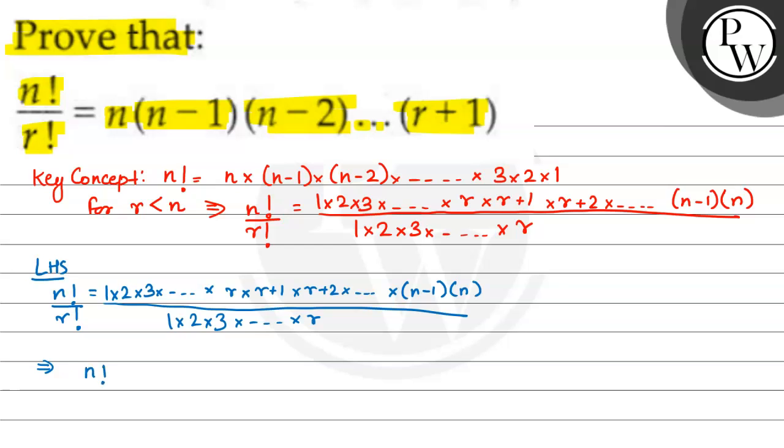This implies N factorial upon R factorial would be equal to R plus 1 बचा यहाँ पे. Multiplication तब तक चलती रहेगी जब तक N minus 1 multiplied by N. तो denominator में तो 1 है. N multiplied by N minus 1 multiplied by N minus 2 so on up to R plus 1. तो बच्चों LHS is equal to RHS मैंने ऐसे proved किया.